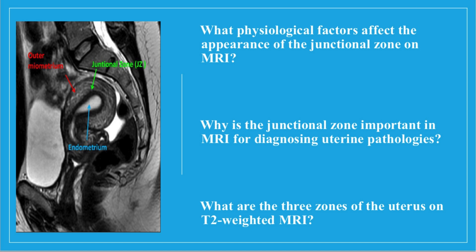Is the junctional zone important in MRI for diagnosing uterine pathologies? It helps assess the depth of myoinvasion in endometrial carcinoma and is crucial for diagnosing adenomyosis. The three zones of the uterus on a T2-weighted MRI include: high T2 signal of the endometrium, low T2 signal of the junctional zone (the inner myometrium), and intermediate T2 signal of the outer myometrium.